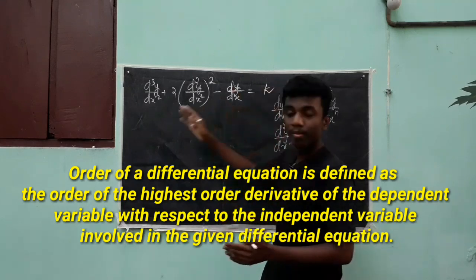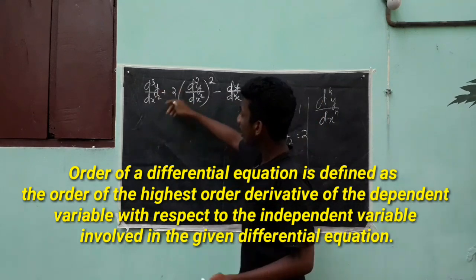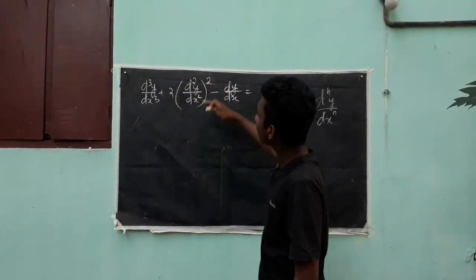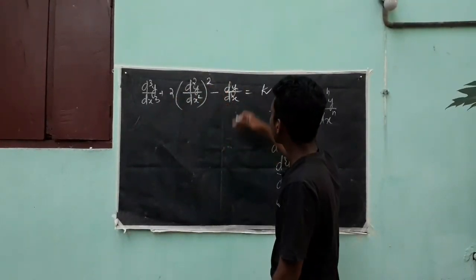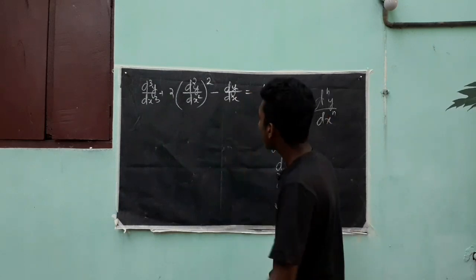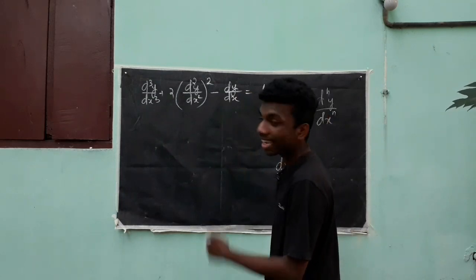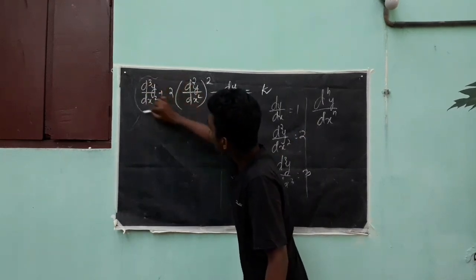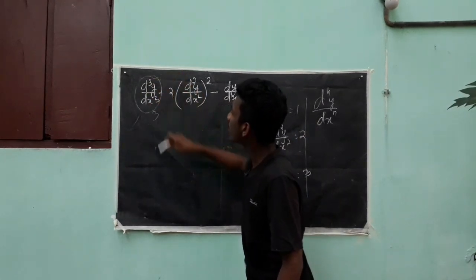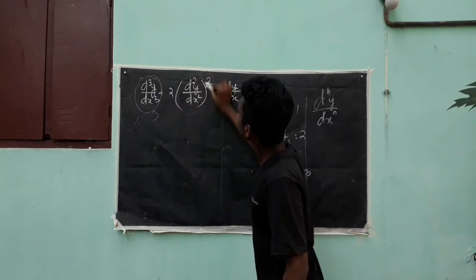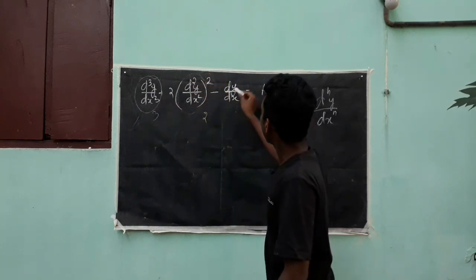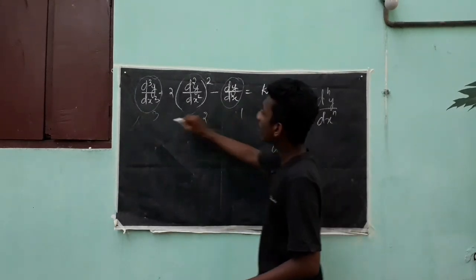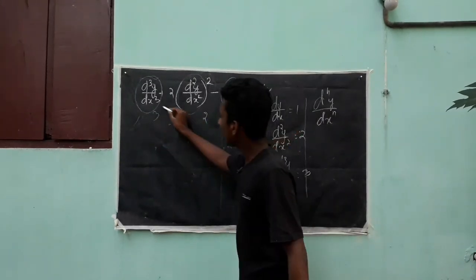For example, take the equation d³y/dx³ + 2(d²y/dx²)² - dy/dx = k. The highest order derivative term determines the order. Here, d³y/dx³ is order 3, d²y/dx² is order 2, and dy/dx is order 1. Therefore, the order of this equation is 3.